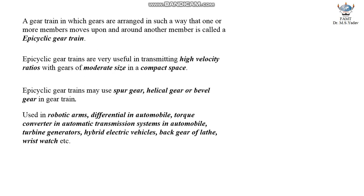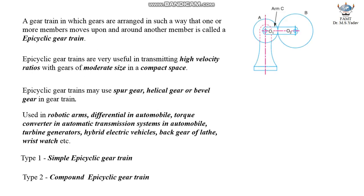There are two types of epicyclic gear trains: simple epicyclic gear train and compound epicyclic gear train. What you see here is a simple epicyclic gear train. It is basically having two gears A and B in mesh with each other and their axis of rotations O1 and O2 are connected to each other by a link called arm.